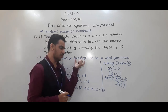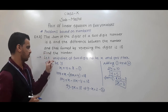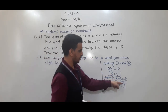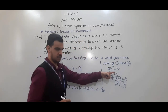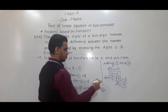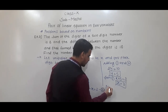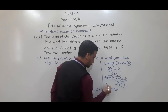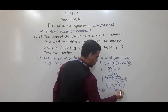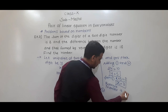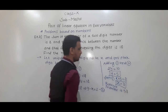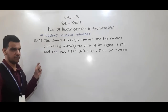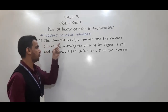So x equals 3 and y equals 5. The number is 10y plus x, with units digit x equal to 3 and tens digit y equal to 5. Therefore the required number is 53.